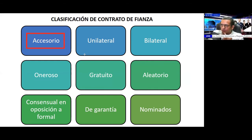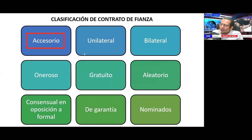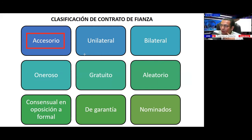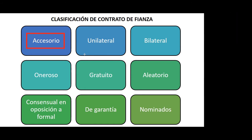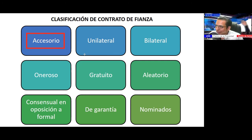A student explains: it is accessory because its existence depends necessarily on another contract, always guaranteeing the fulfillment of the obligation of the principal contract. If the principal contract is fulfilled, this contract has no sustenance. The rule is that the accessory follows the fate of the principal — if the principal obligation is fulfilled, this contract has no operability.